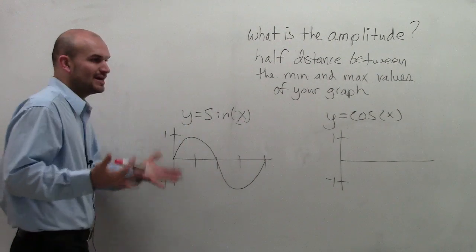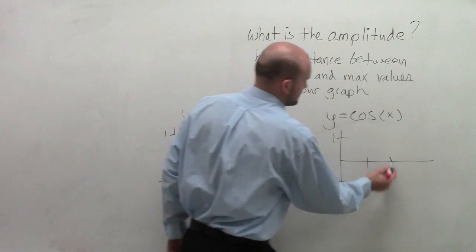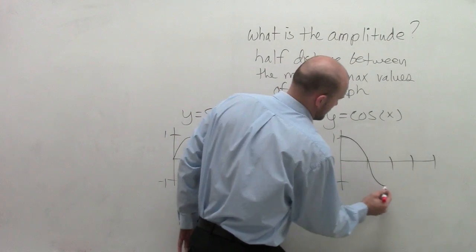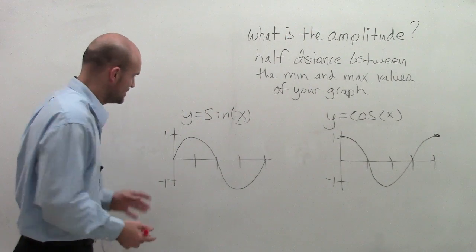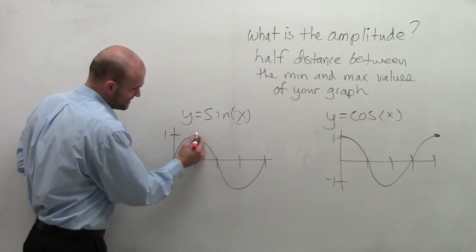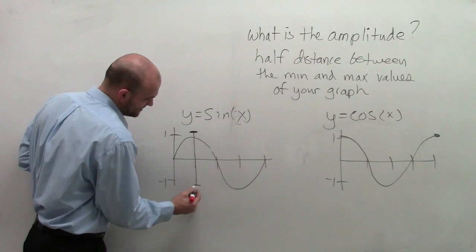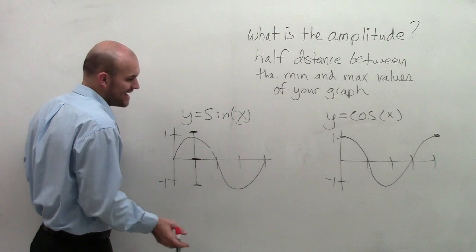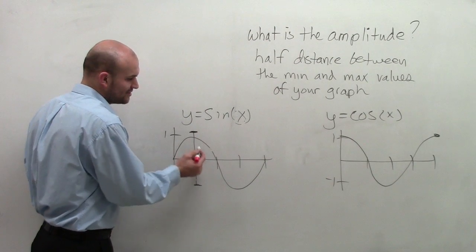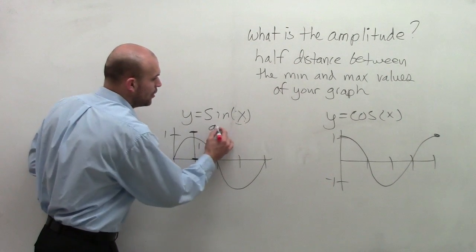So therefore, if we're going to look at the half distance, that means the maximum distance is from here all the way down to here. So half of that distance is going to occur at the x-axis, which you can say the amplitude is going to be 1.